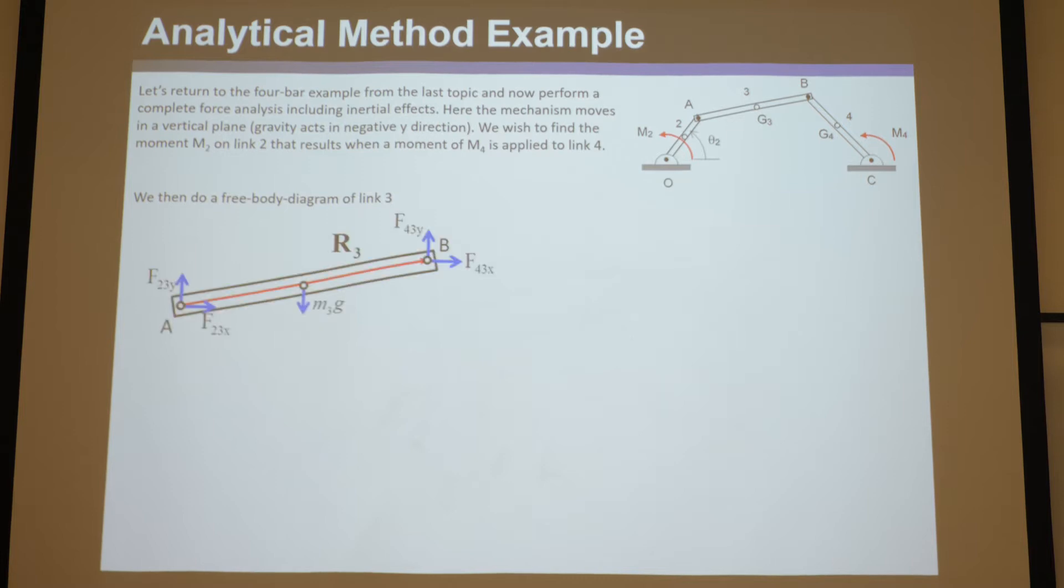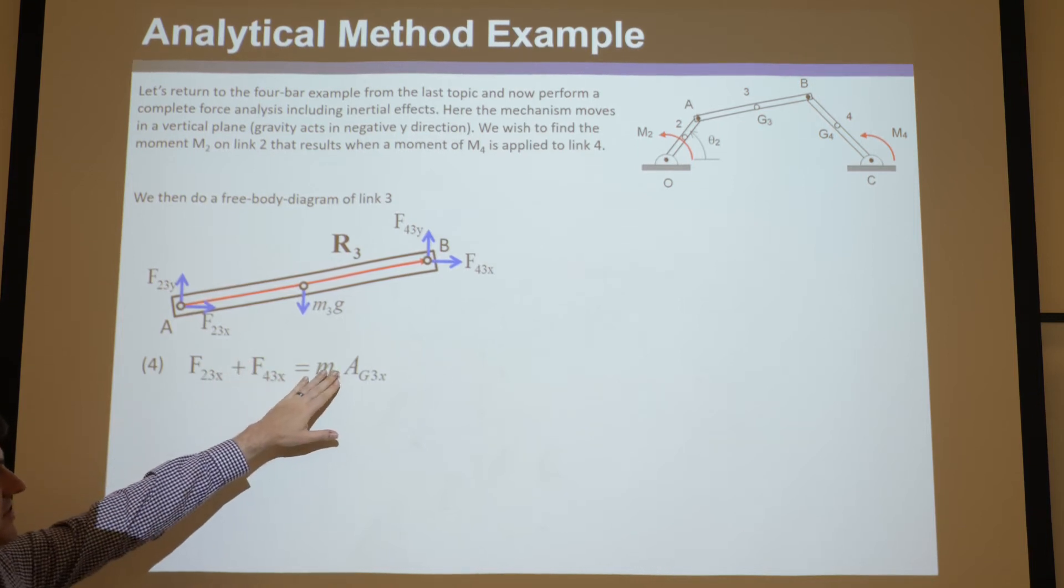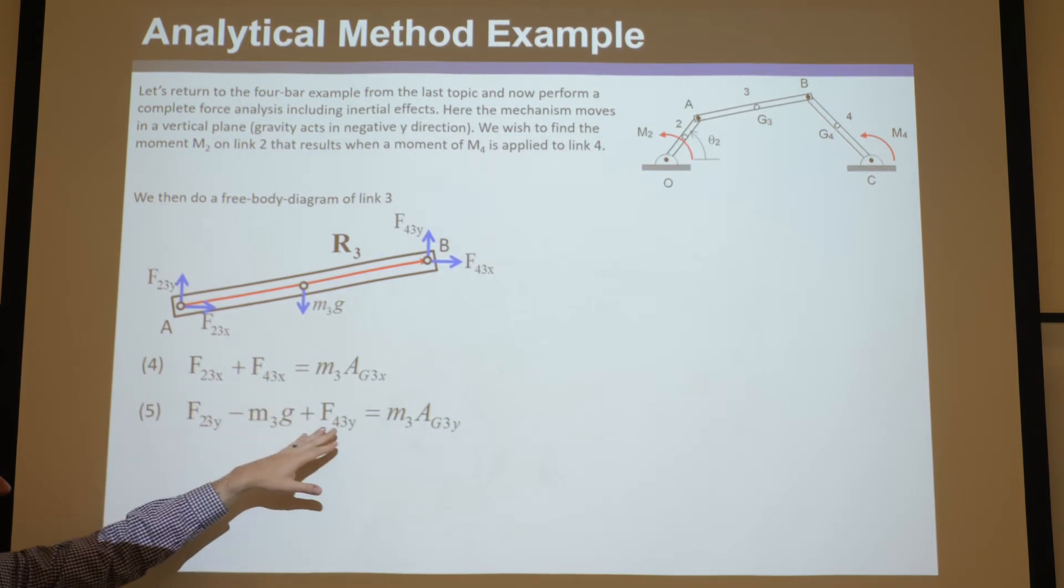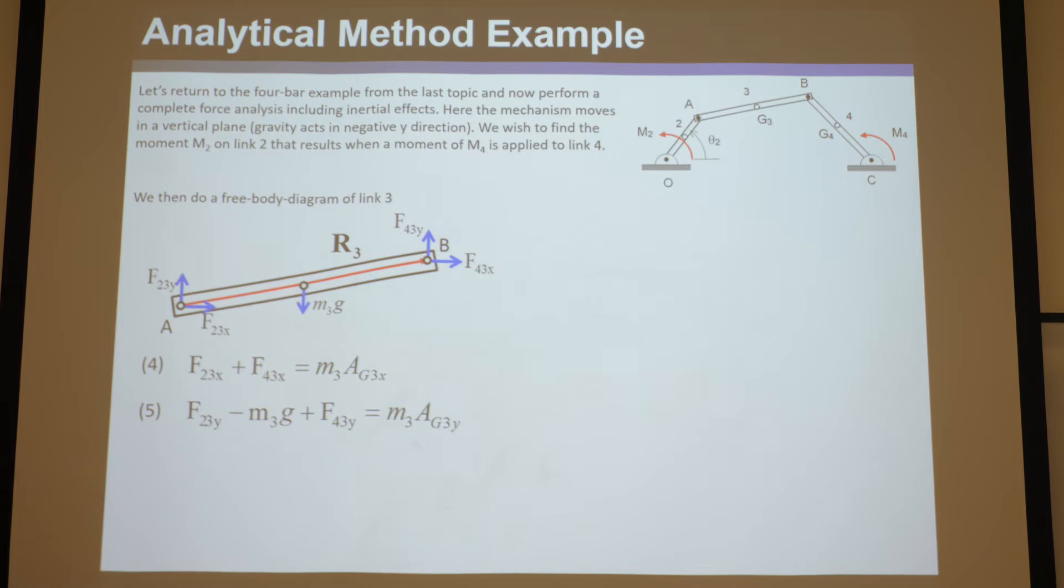So we do the same thing on three. It's the same free body diagram from before. The left side is always going to be the same, but now instead of zero, we again do mass times acceleration. Same thing with the y components, mass times acceleration of the center of mass in the y component.